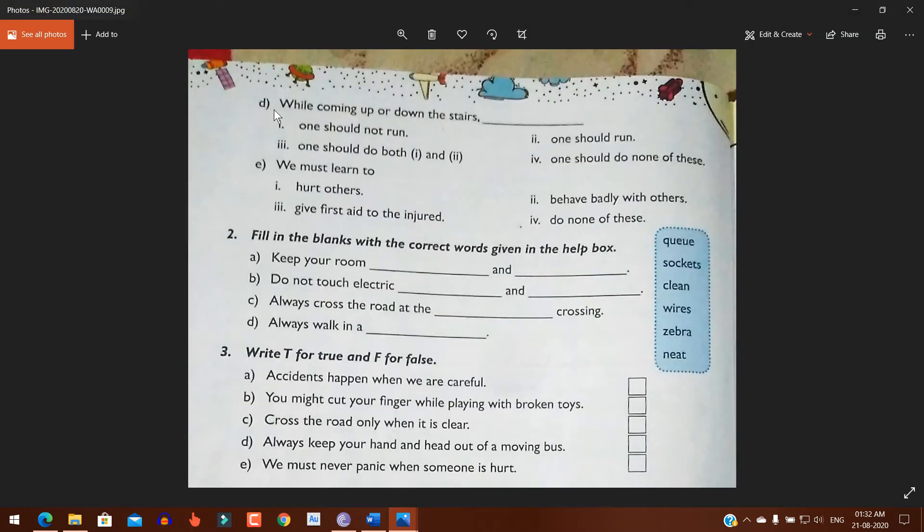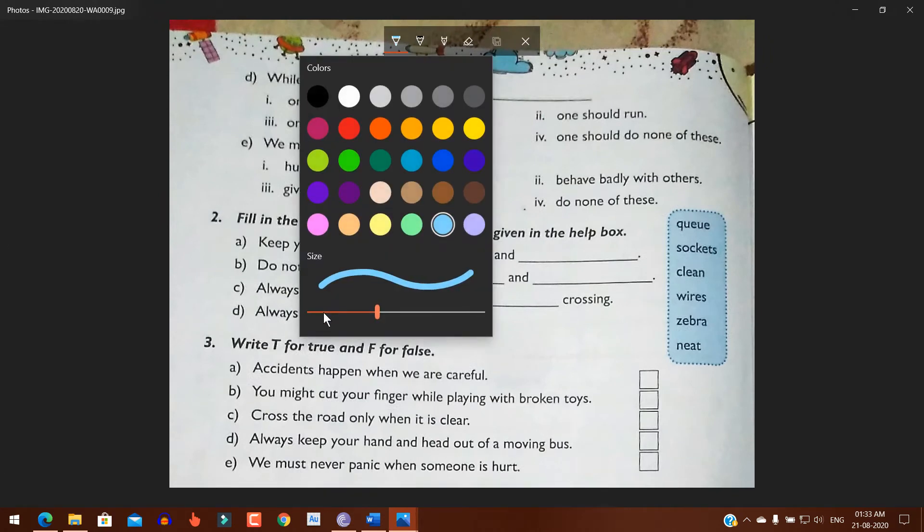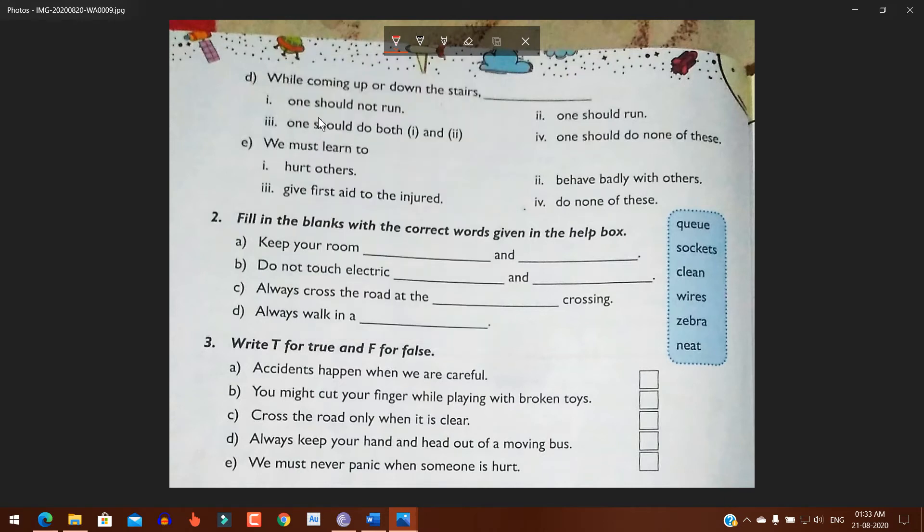Number D: While coming up or down the stairs: number one, one should not run; number two, one should run; number three, one should do both one and two; number four, one should do none of this. The answer is number one: one should not run.